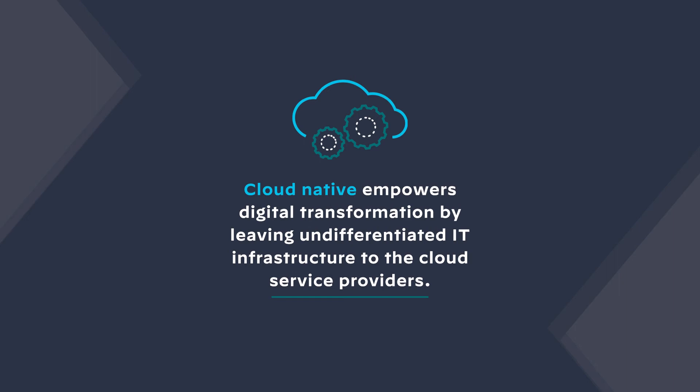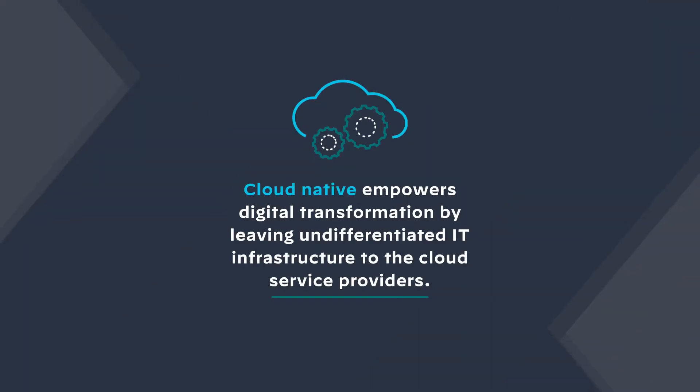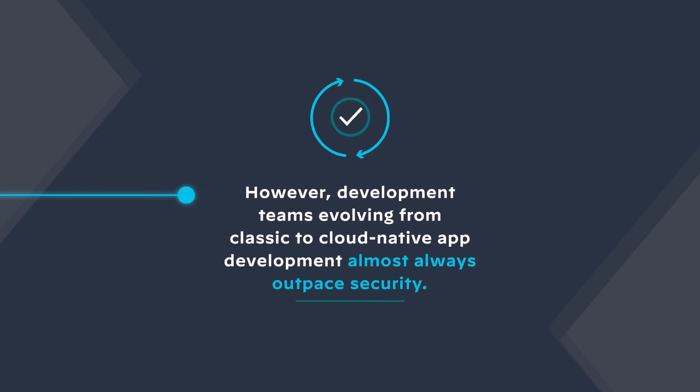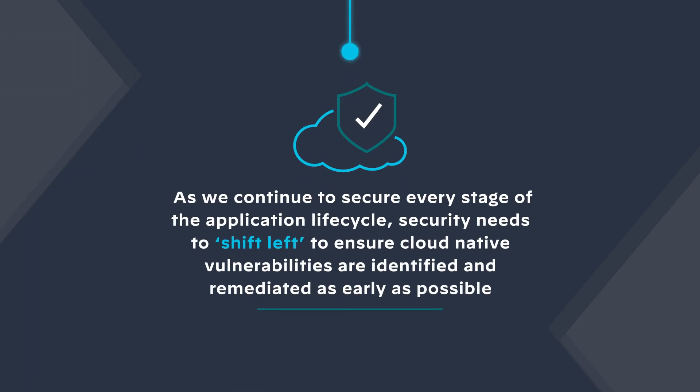Let's recap what we've learned. Cloud native empowers digital transformation by leaving undifferentiated IT infrastructure to the cloud service providers. This allows organizations to focus on building and running apps that deliver competitive advantage, connect their workforces, and serve their customers. However, development teams evolving from classic to cloud native development almost always outpace security. Meanwhile, cloud security teams struggle to apply new tools and technologies every time a new security risk is highlighted. In response, security needs to shift left to ensure cloud native vulnerabilities are identified and remediated as early as possible in the development process. What we are witnessing is an industry-wide attempt for security to catch up to both time and technology. The cloud native era represents a fundamental shift in the way that enterprise security has traditionally been delivered. Stay tuned for part two of this episode, where we start putting the puzzle pieces together for cloud native application protection platforms.